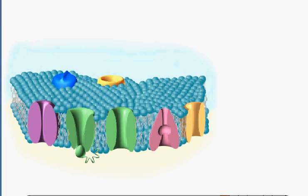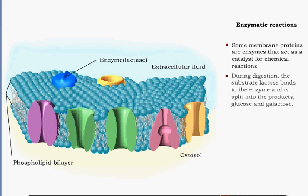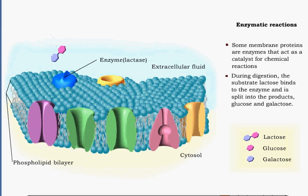Both plasma and organelle membrane surfaces contain enzymes, another type of membrane protein. As such, membranes are active sites for chemical reactions. For example, during the process of digestion, the enzyme lactase binds to the lactose substrate and splits it into two usable products.